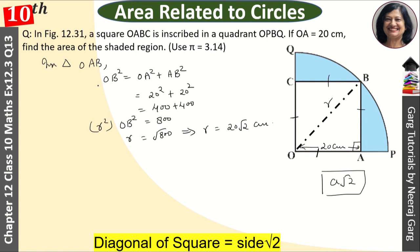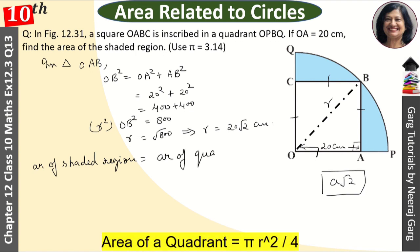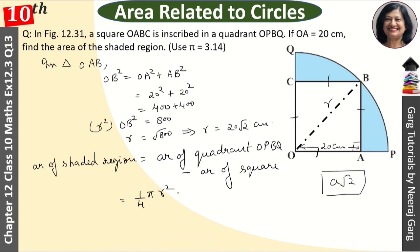After this, we have to find the area of shaded region. Area of shaded region is equal to area of quadrant OPBQ minus area of square. Area of quadrant formula is 1 upon 4 π r square minus side square.